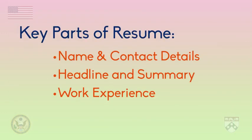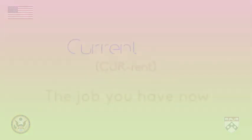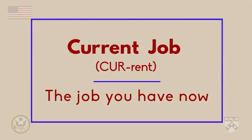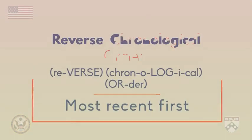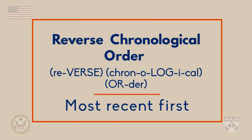The third part of the resume you need to include is work experience. Here, you can list the jobs you have worked at in the past, including your current job, if you have one. Be sure to list your work experience in reverse chronological order. In other words, list your most recent job first, the one before that next, and so on into the past.